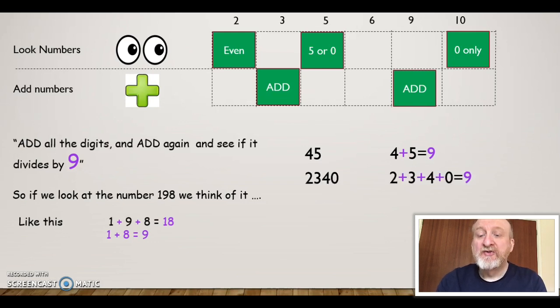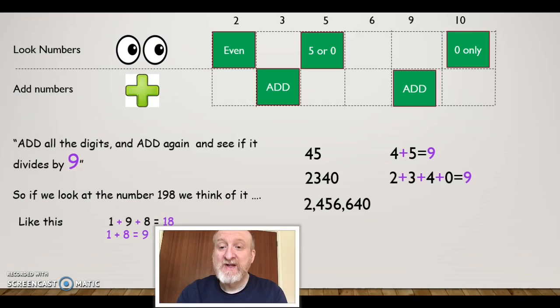2,340, add those numbers up, I get 9. This isn't a magic trick, this is just the way numbers work. 2,456,640, when I add all those numbers up I get 27. When I add the 2 + 7 from the 27, I get 9. That means it's exactly divisible by 9. That's the 9 rule: add and if needs be, add again.